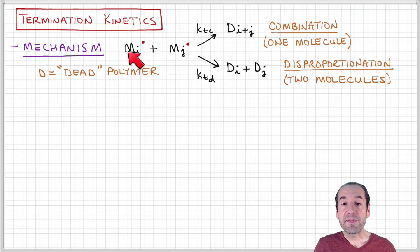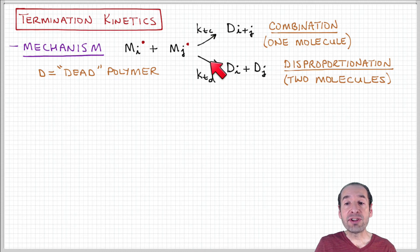Another possibility is that these two active chains of length I and J could both terminate individually to form two dead chains of length I and J. This mechanism is called disproportionation. Each of these two processes can be thought of to have their own rate constant: termination by combination and termination by disproportionation.